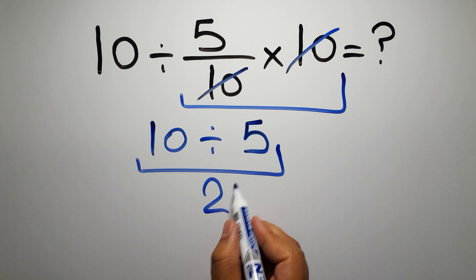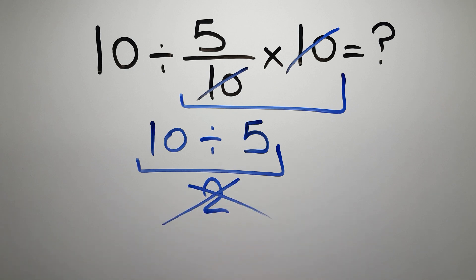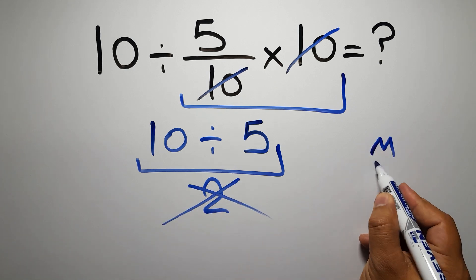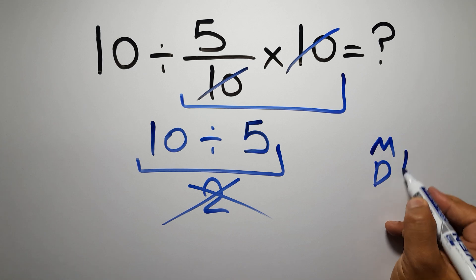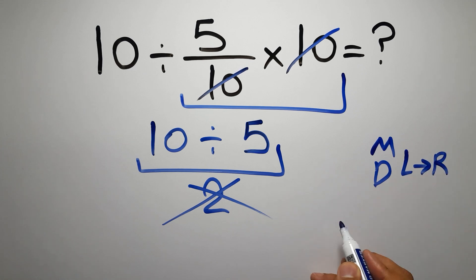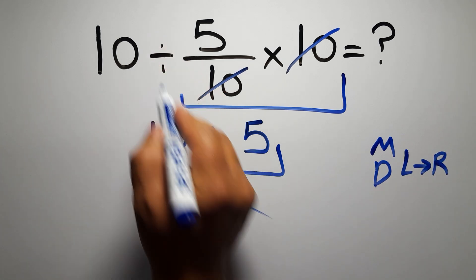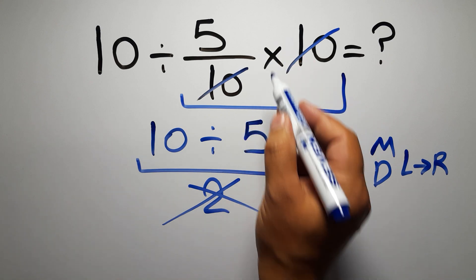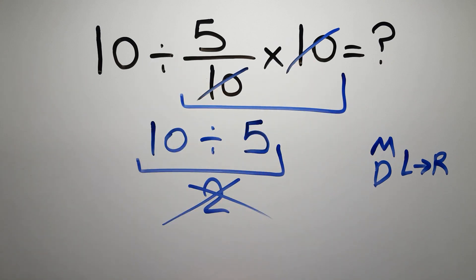But this answer is not correct, because according to the order of operations, multiplication and division have equal priority, and we have to work from left to right. So here, first we have to do this division, then this multiplication. If we do this multiplication before this division, it is wrong.